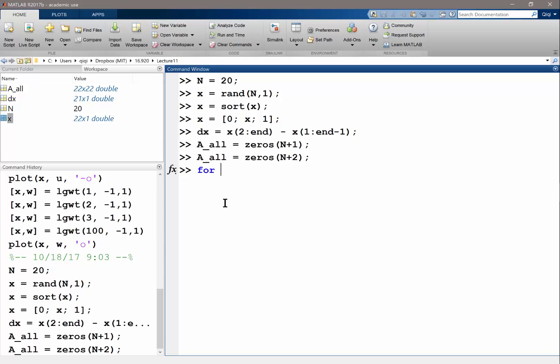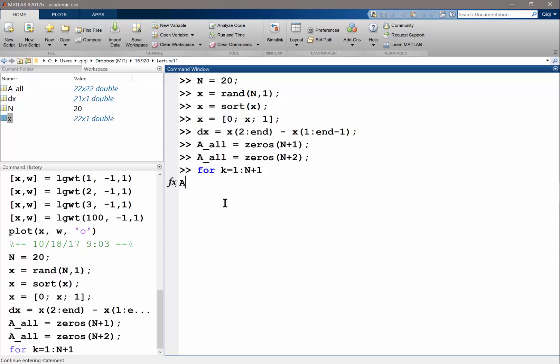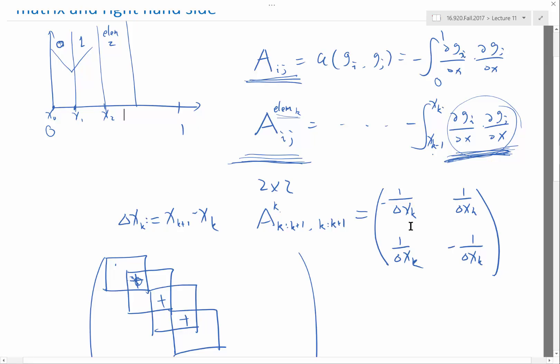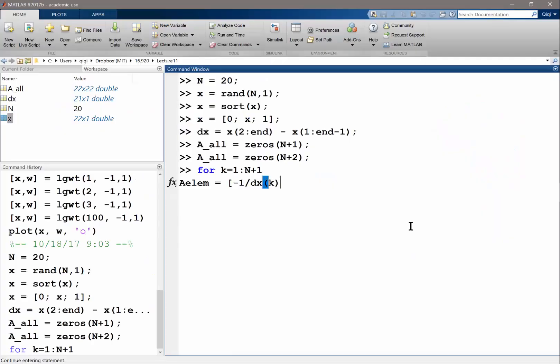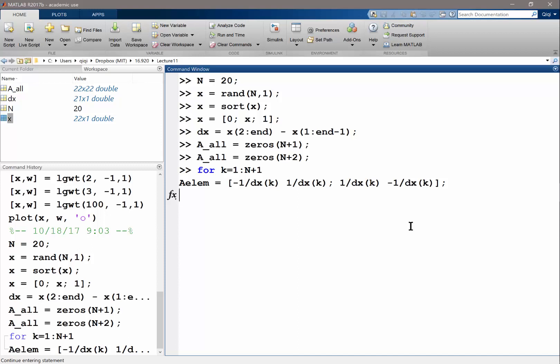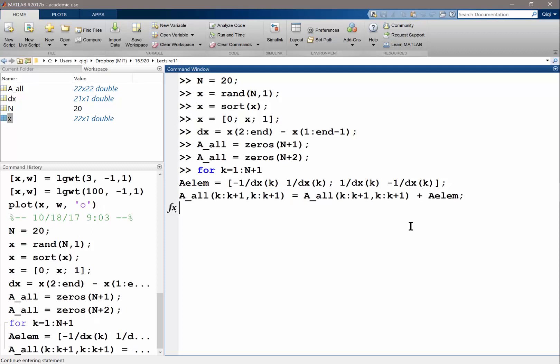Then I'm going to be looping over all the elements. So for k goes from 1 to n plus 1, I have n plus 1 elements. A_element for this particular element should be just a 2 by 2 matrix of minus 1 over dx_k, 1 over dx_k, 1 over dx_k, minus 1 over dx_k. So that's my element matrix. And then A_all, starting from k to k plus 1 and k to k plus 1 is equal to itself plus, this is just doing accumulation, plus A_element.